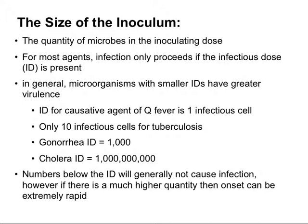Numbers below the ID will generally not cause an infection. However, if there's a much higher dose in the inoculum, then the onset of infection can be extremely rapid. Now we've considered step one of becoming established — the different portals of entry and the size of the inoculum required. Now we'll move on to step two: how pathogens actually attach to the host and become resident.